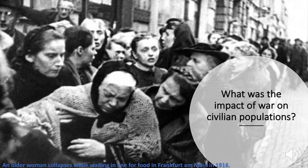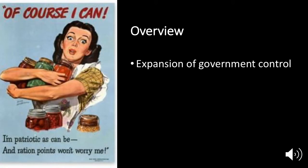World War I was the first total war, which means that the entire population — civilians included — will be affected by the war in different ways. Pretty much every country saw an expansion of government control over the people, and they all created new government ministries to help direct resources. World War I was the first truly industrial war, which means that all of the country's resources — financial, educational, agricultural, cultural, and human — are going to be geared towards fighting the war.